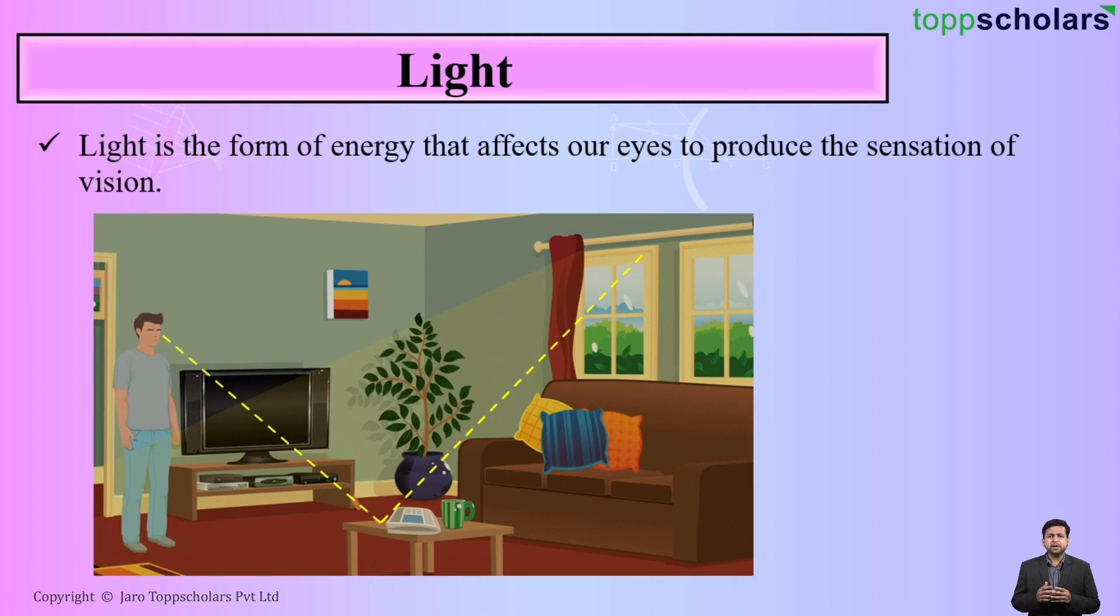For example, in this particular diagram, can you see a ray of light is passing from the window on the table and that reflection is reflected towards the eye of the person. So that is the only reason why the person is able to see the table. If suppose there is no light, he would not be able to see the table. So this is exactly light.